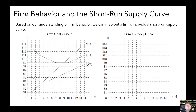First, let's take a look at how a firm's individual decision-making gives rise to its individual short run supply curve. On the left, I'm showing a firm's cost curves, and on the right, I want us to plot the firm's individual supply curve.